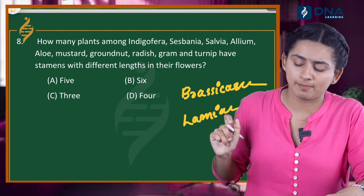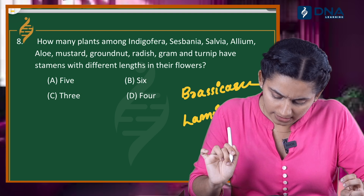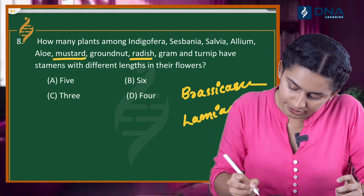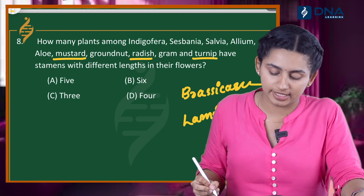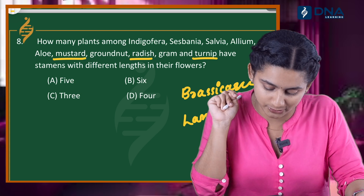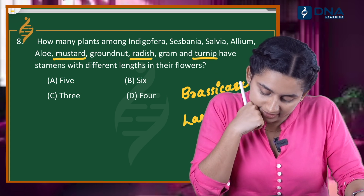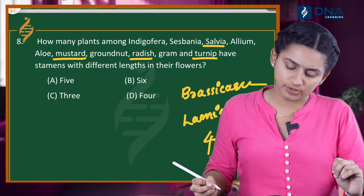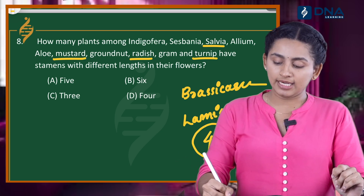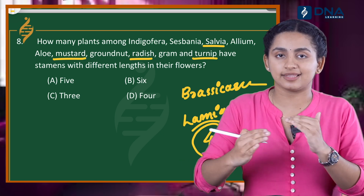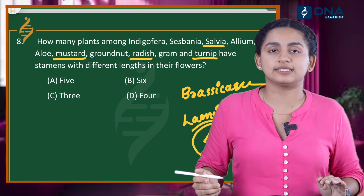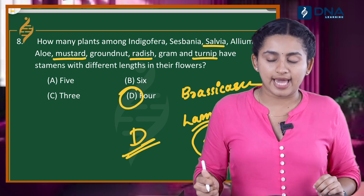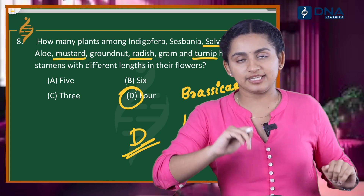So in these two families — Brassicaceae and Lamiaceae — we find stamens of different lengths. Mustard, radish, turnip are Brassicaceae and Salvia is Lamiaceae, giving us 4 plants total. The correct answer is Option D — 4 plants have stamens with different lengths.